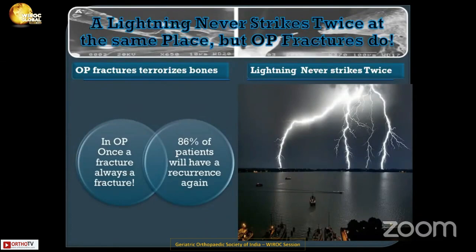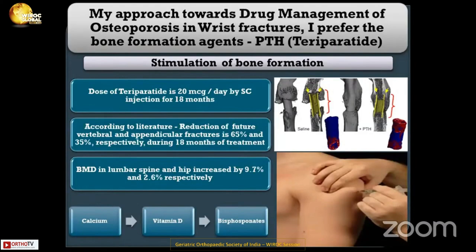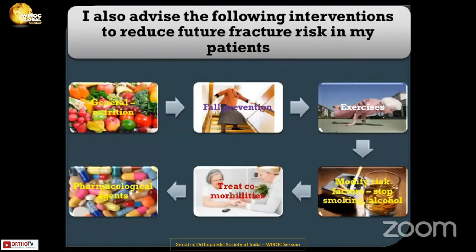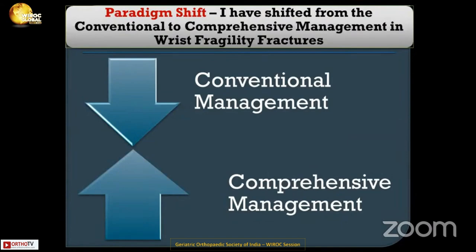This wrist fracture must be used as an opportunity to prevent major hip or spine fractures. I treat osteoporosis with a standard drug regimen. I prefer teriparatide, though most patients cannot afford PTH, so I go for zoledronic acid — but it is a once-a-year dose and I was not very comfortable with that. So I prefer a combination of calcium, vitamin D, bisphosphonates like zoledronic acid, and teriparatide as the drug of choice for 18 months. Along with pharmacological agents, I advise patients on general nutrition, fall prevention, exercise, modifying risk factors like stopping smoking and alcohol, and treating comorbidities. This becomes the comprehensive management — fracture treatment combined with osteoporosis treatment.